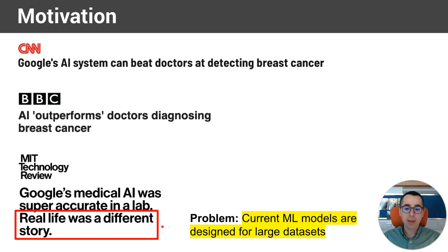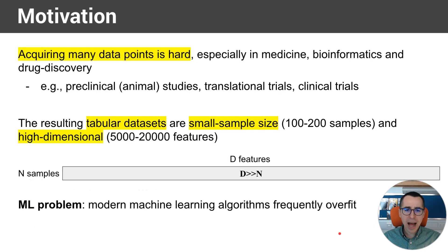One of the problems is that current ML systems are designed for large datasets. So they assume that there is a large training dataset, and in reality, acquiring large datasets is very hard. And this is especially true in experimental sciences, such as medicine, bioinformatics, and drug discovery, and this is profoundly true in early-stage clinical trials.